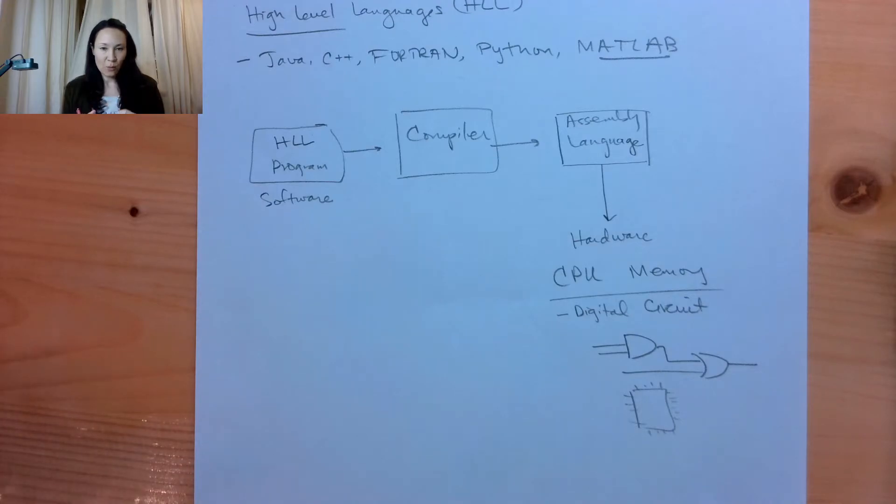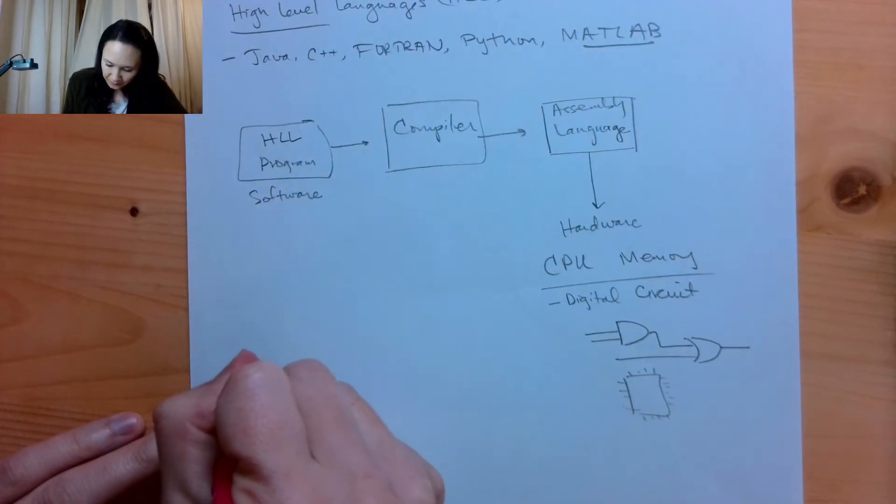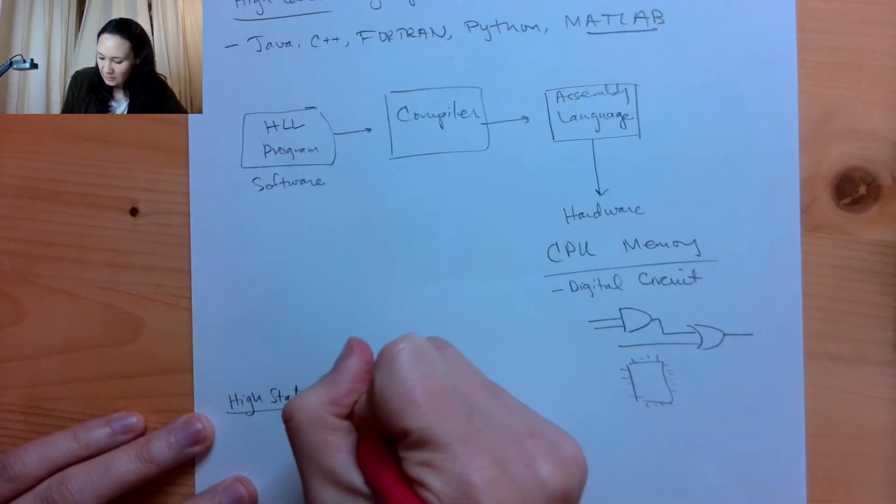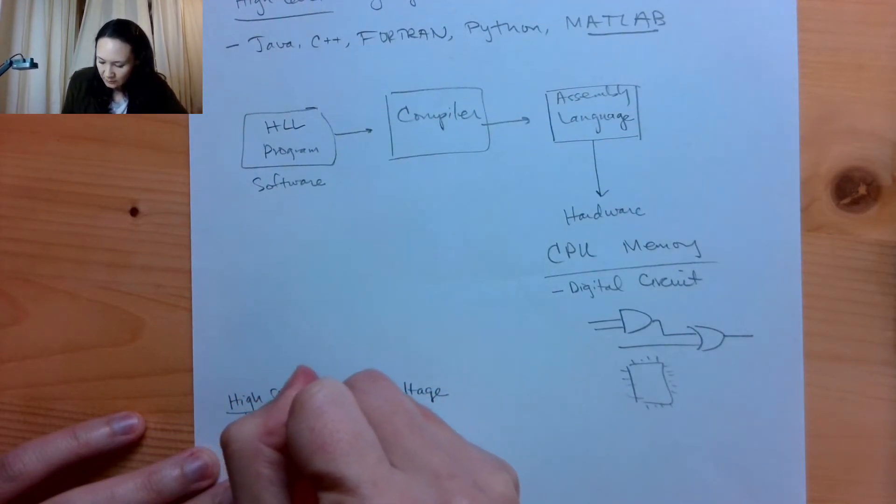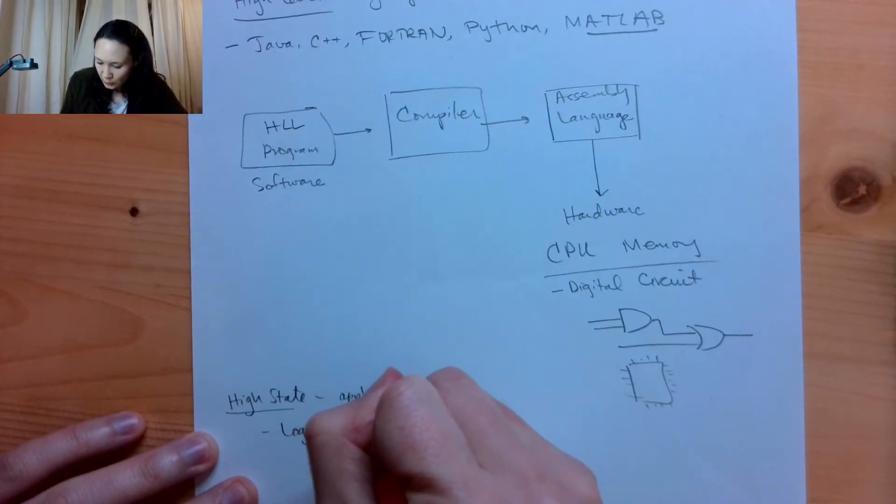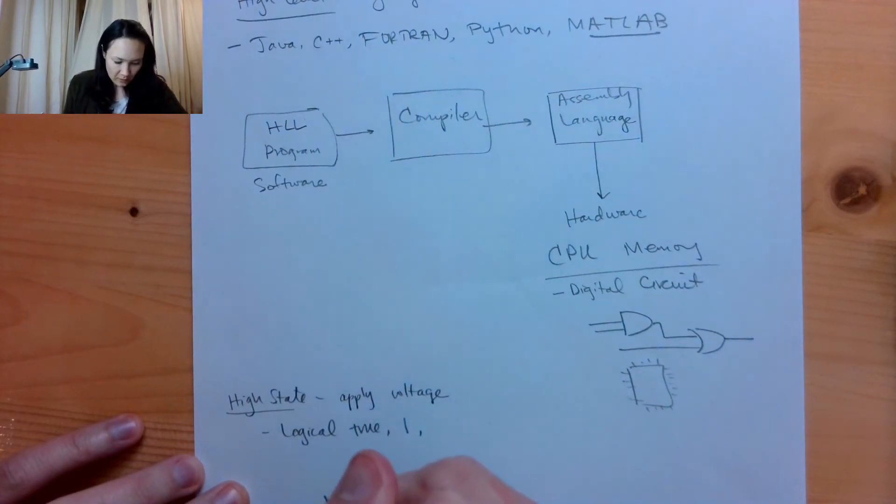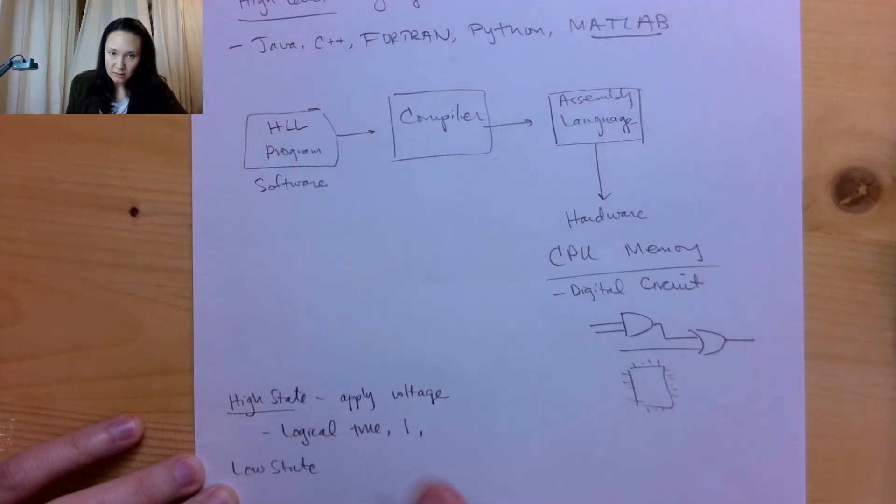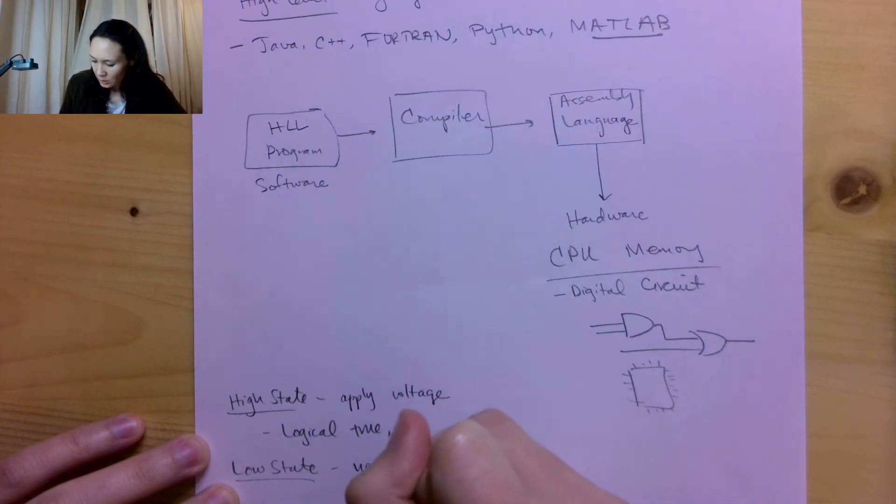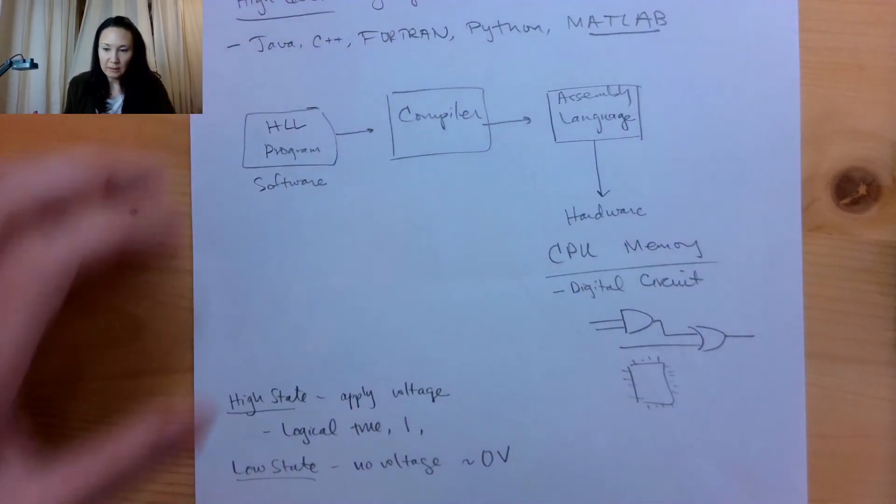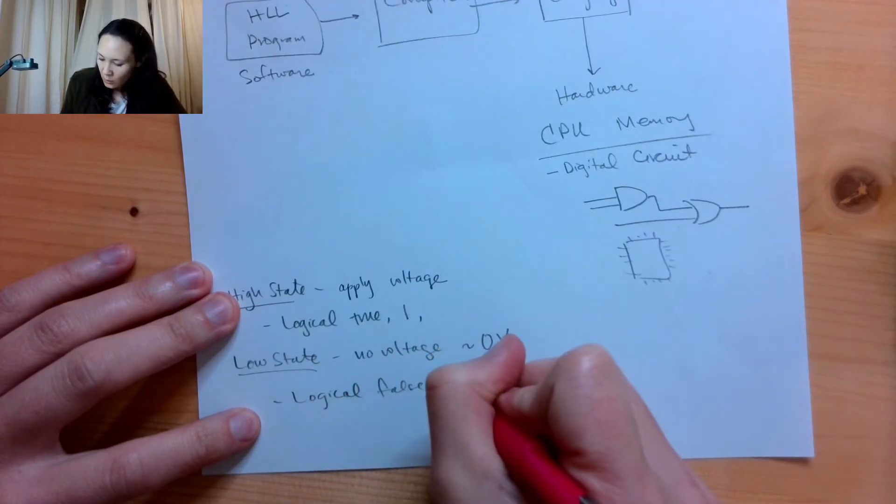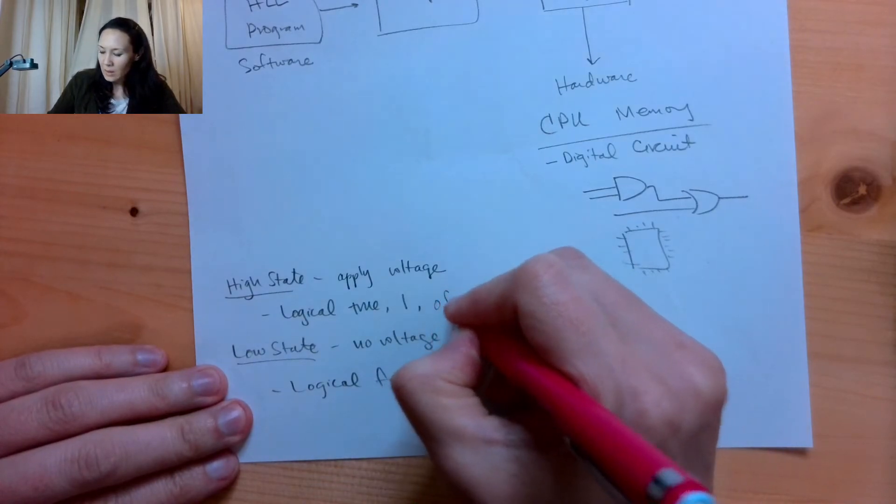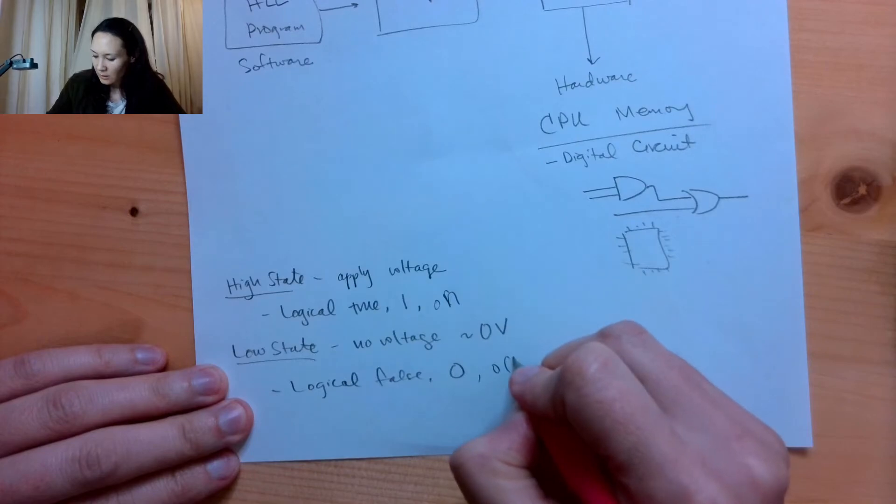We have state one, and we have state zero. So the state one is also referred to as the high state. The high state is when we apply a voltage. It's also referred to as logical true, or one. The low state, this is when no voltage, or I should say about a zero voltage is applied, and this is logical false, or zero. So this would be like a circuit line is on, and this would be a circuit line is off.